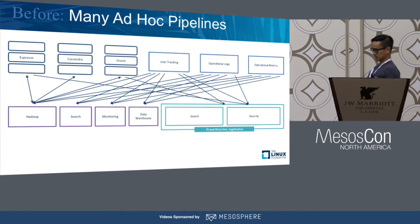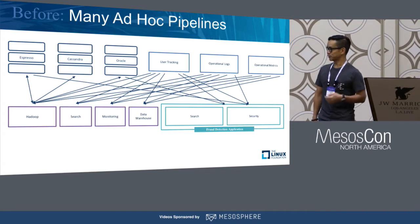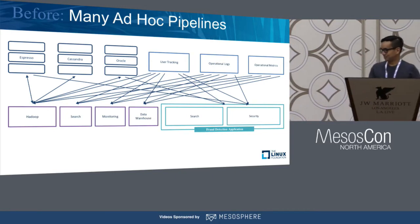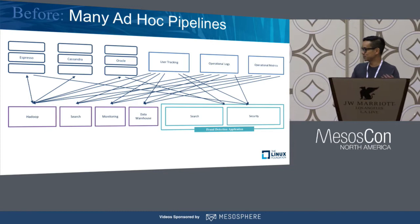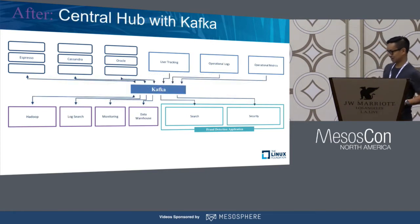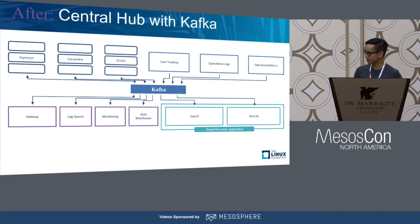Why was Kafka invented? At LinkedIn, they had a number of systems that needed to talk to each other, and over time building custom integration points between every pair of systems got messy. That's why Kafka was invented as a centralized message bus - acting as a message hub for all systems. Because it's centralized, you eliminate duplication and get a consistent interface.